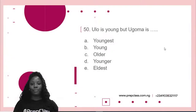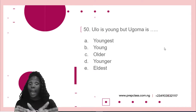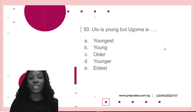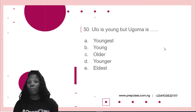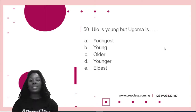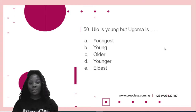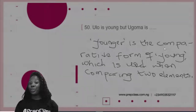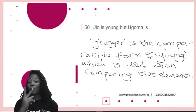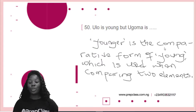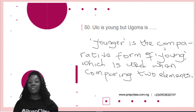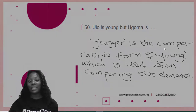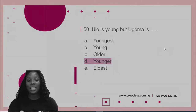Our 50th and final question: Ulla is young, but Ugova is dash. Remember — comparative for two, superlative for three or more. Options: A: youngest. B: young. C: older. D: younger. E: eldest. We have younger. We use comparative when comparing two, and younger is the comparative form of the adjective young, used when comparing two elements. So option D, younger, is correct.